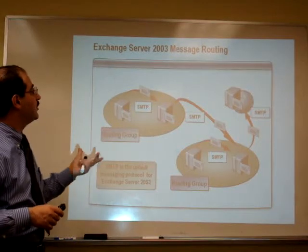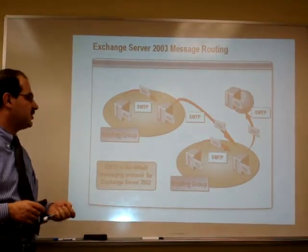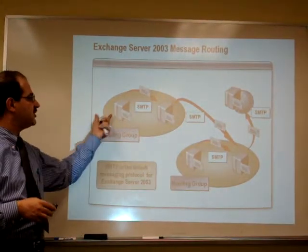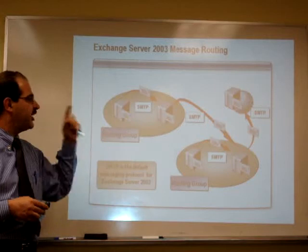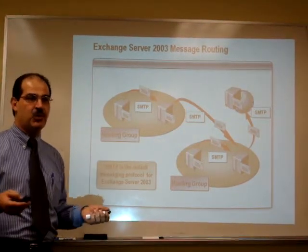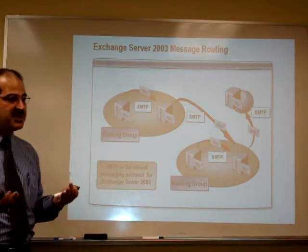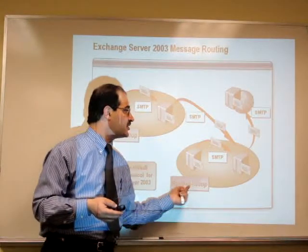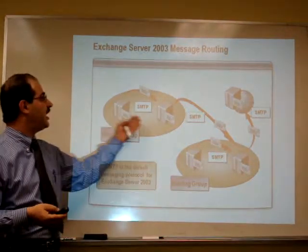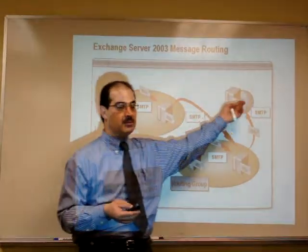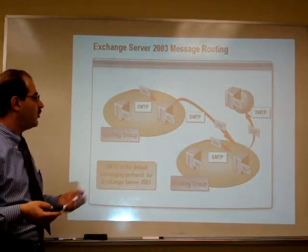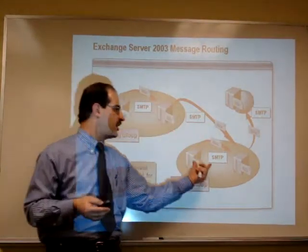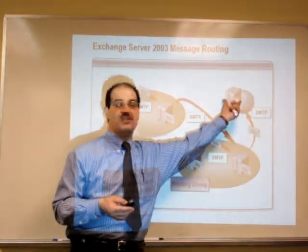Let's see how message routing works in Exchange Server 2003. We have what we call routing groups — like different branches. Each branch has an Exchange Server, and in each branch we have an SMTP server. Many businesses use SMTP servers for sending messages. At another branch we have another routing group and another SMTP server. Mail information is synchronized from one routing group to another, and the routing group synchronizes to another SMTP server.